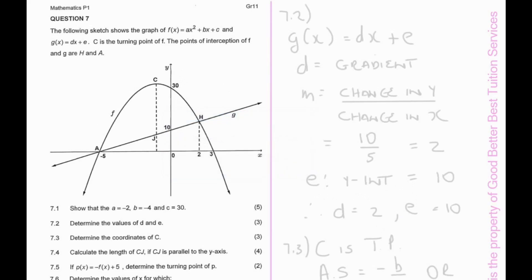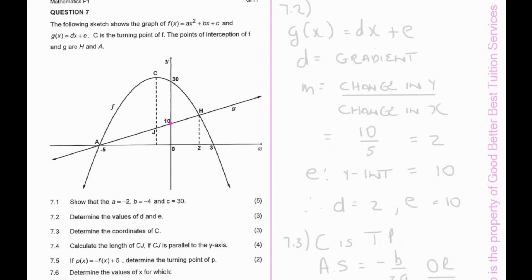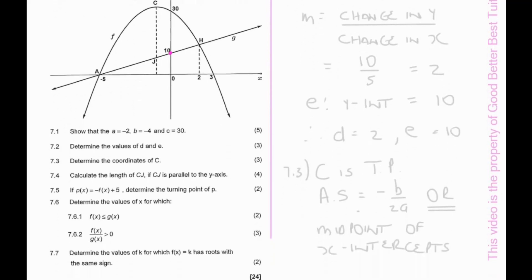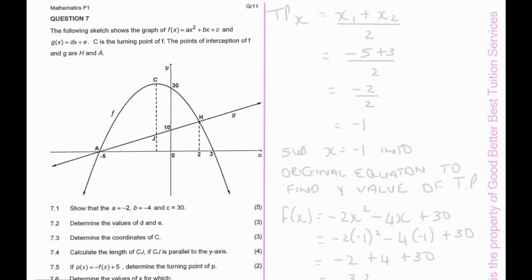Question 7.3 asks us to determine the coordinates of C, the turning point. We can use either the axis of symmetry formula (−b/2a) or the midpoint formula. Using the midpoint of the two x-intercepts: (−5 + 3)/2, which gives an x-value of −1 for the turning point.